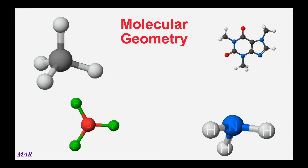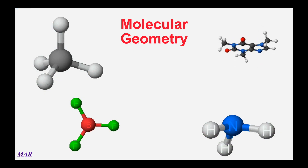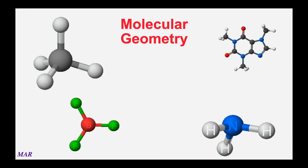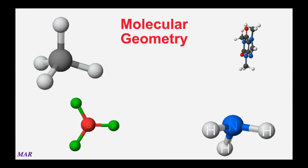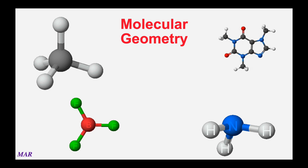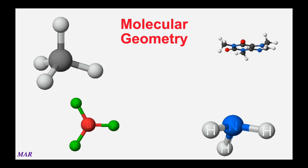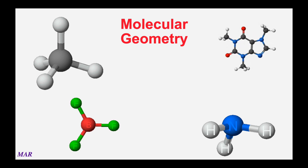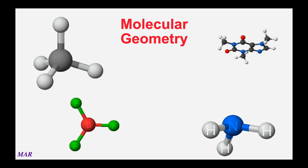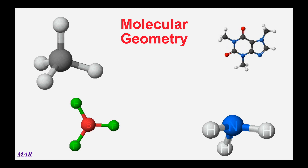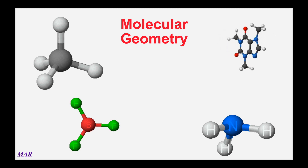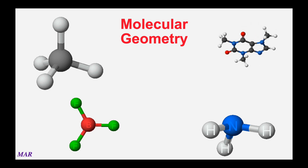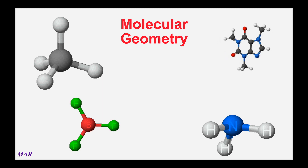Now that we've mastered the Lewis structure and can tell where electrons will be situated in a molecule, we can extend it a little bit further into what's called molecular geometry. Geometry is just, in a chemical sense, how and why these molecules take these shapes.